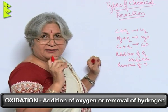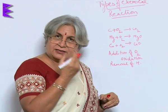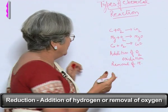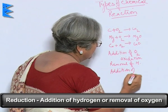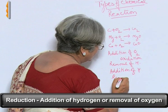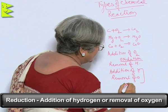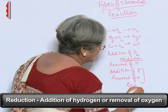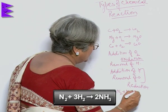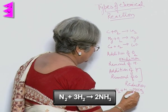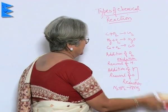So either addition of oxygen or removal of hydrogen means oxidation. There is another complementary reaction: reduction. Reduction is addition of hydrogen or removal of oxygen. For example, N2 plus H2 gives ammonia — this is reduction.